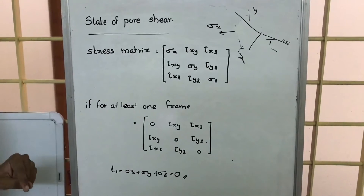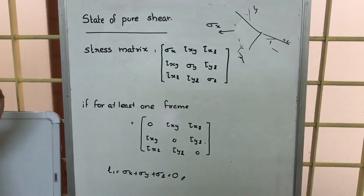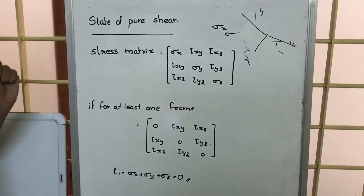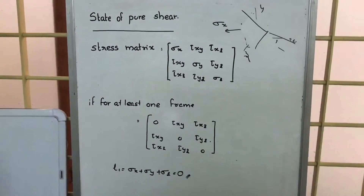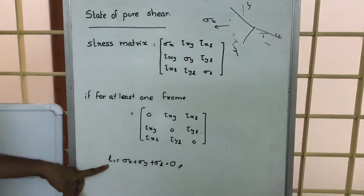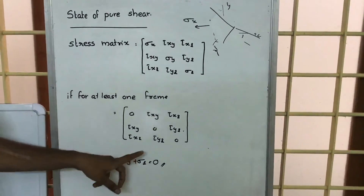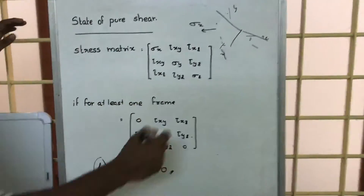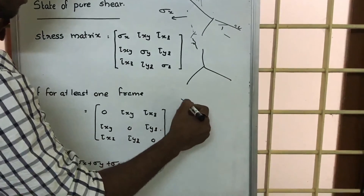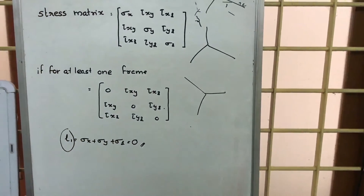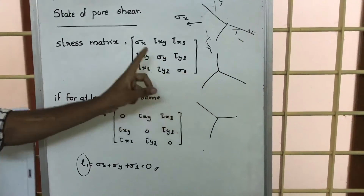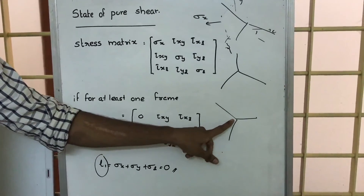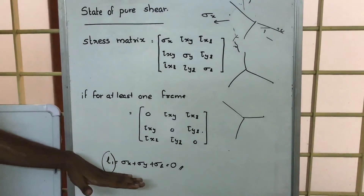For a particular point, the state of pure shear occurs if at least one stress matrix can be written such that the diagonal elements are zero. We already know the first invariant l1 is the sum of diagonal elements: sigma x plus sigma y plus sigma z equals zero. This quantity is called an invariant because even if we rotate the coordinate system, the sum of the diagonal elements for a stress matrix at a given point remains the same.